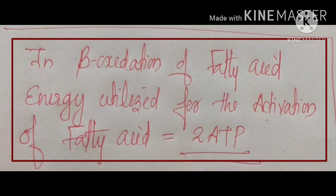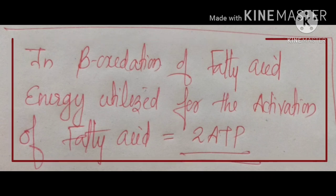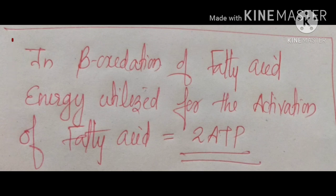In the activation step, the fatty acid reacts with 1 molecule of ATP, from which 2 phosphates are added to the fatty acid. As a result, that 1 ATP is converted to AMP — adenosine monophosphate. AMP then converts back to ADP, consuming another ATP equivalent. So whenever ATP is converted to AMP, it is equivalent to the consumption of 2 ATP molecules — hence 2 ATP are consumed in the activation step.